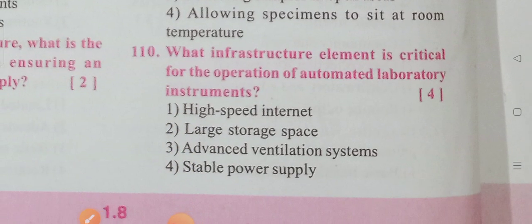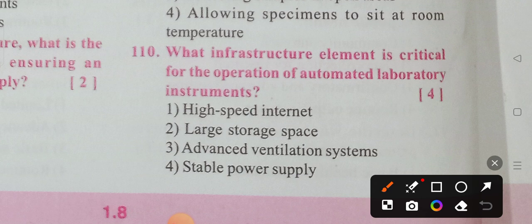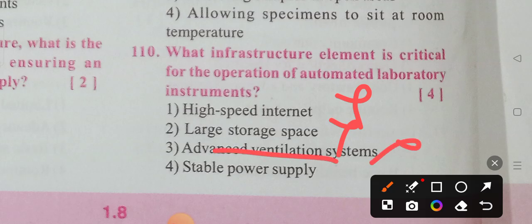What infrastructure element is critical for the operation of automated laboratory instruments? The options are: high speed internet, large storage space, advanced ventilation systems, and stable power supply. The correct answer is stable power supply.